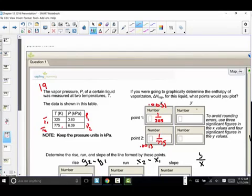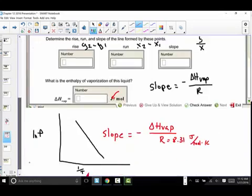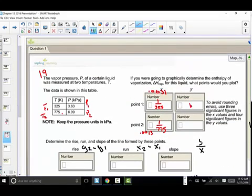How about the y? Well, remember on the graph the y is the natural log of p. So here what we need to do is to go back and take the natural log of the first pressure 3.63 and then for the natural log of 6.09